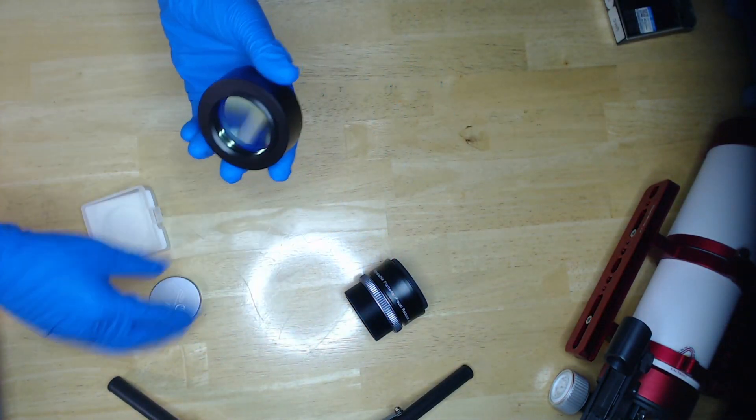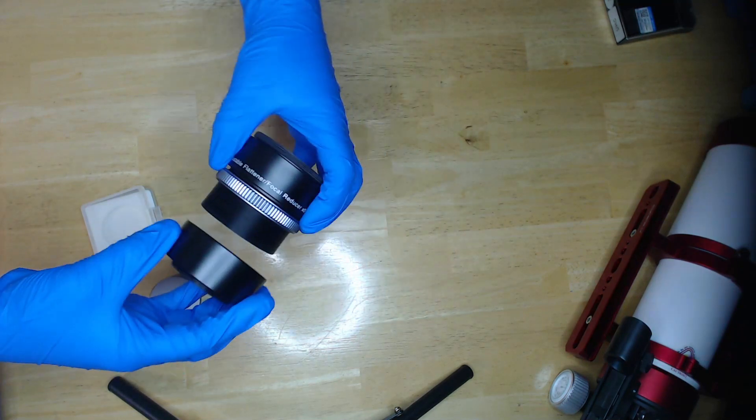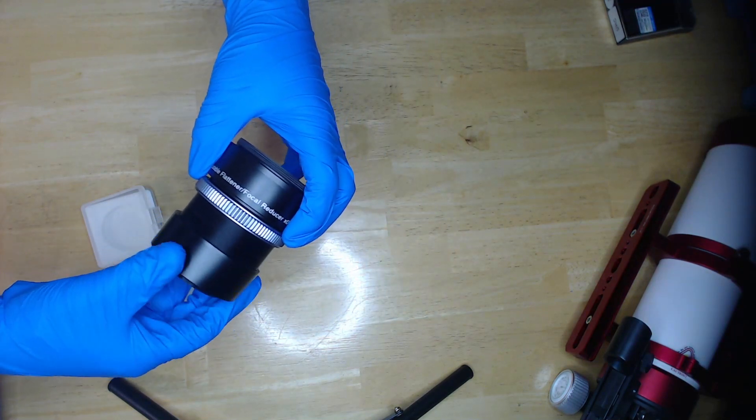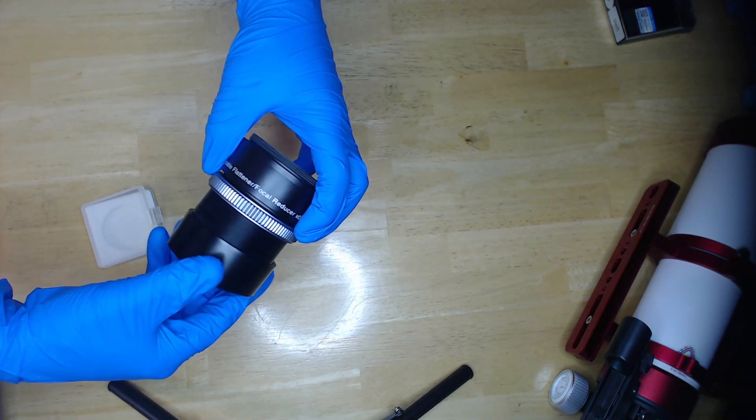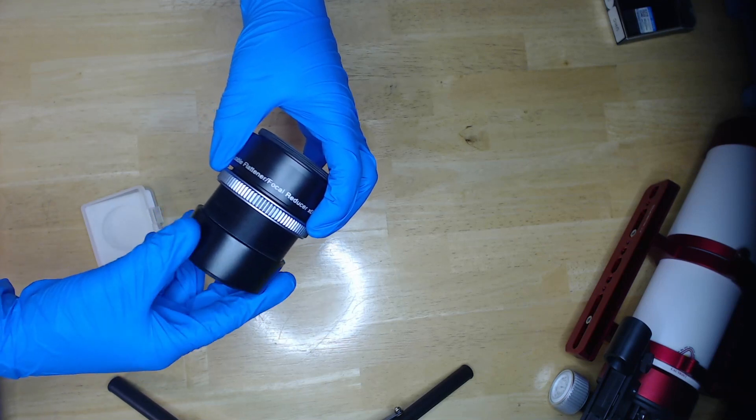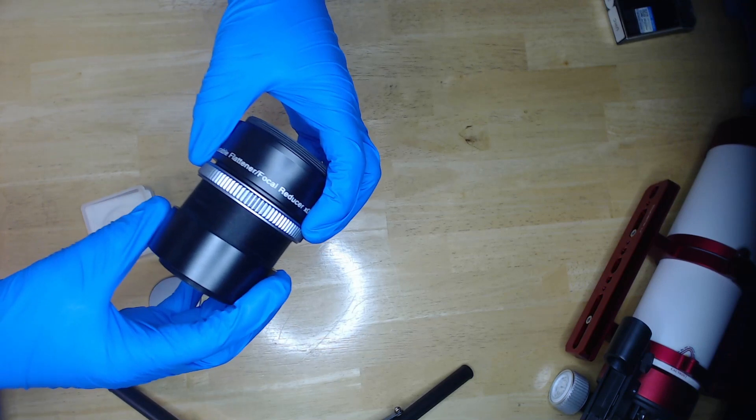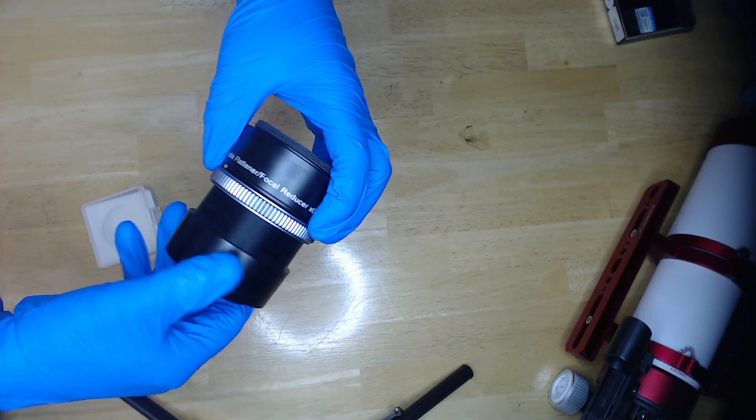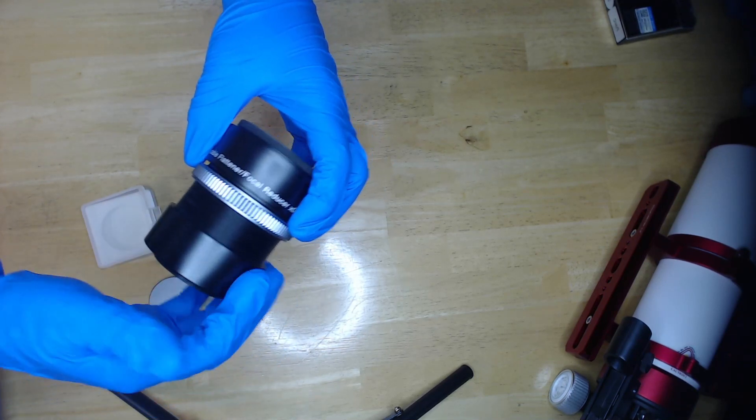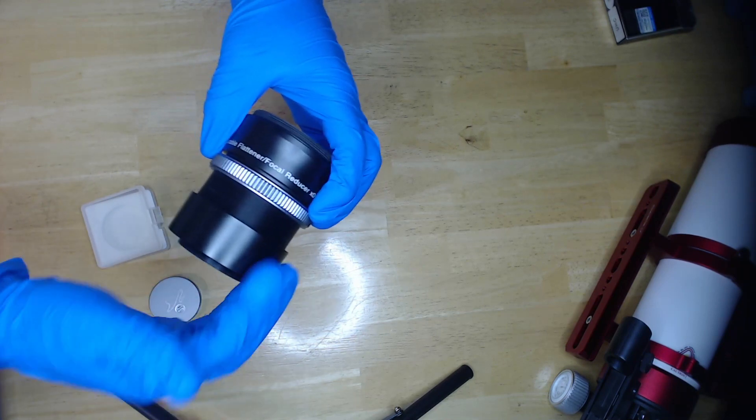It's very sturdily in place, so we're good to go. We can now reattach it to the back of the focal reducer. Luckily, this is a much faster process than unscrewing it—or at least it feels faster.